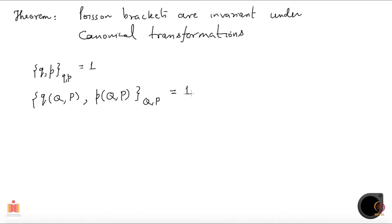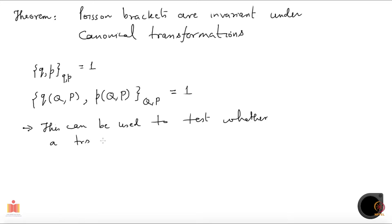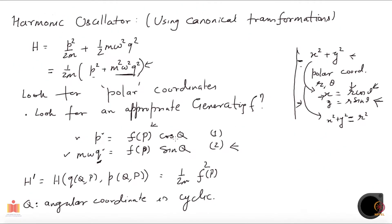This can be used to test whether a given transformation is canonical. You do not have to first figure out what the generating function is. Just by doing this test, you can figure out whether the new set of coordinates given to you are canonical — whether they are going to satisfy canonical equations of motion. I can give a simple example based on what we did for the harmonic oscillator.